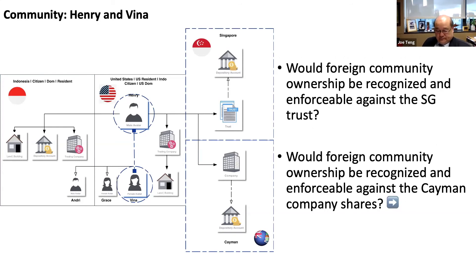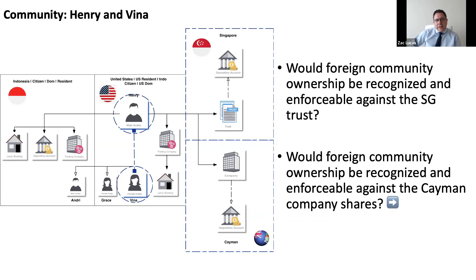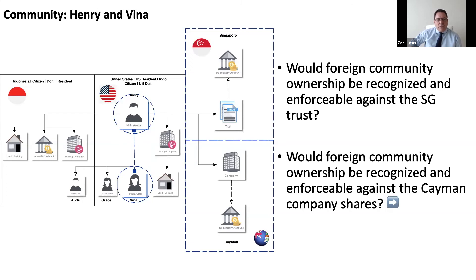Zach — is US community property ownership recognized and enforceable against the Singapore trust in this case? The same thing again — common law principles would be applied as to whether the assets transferred into the trust were totally the ownership of Henry. It would be a matter of proprietary rights being recognized under the marriage domicile. Singapore doesn't have any firewall protections that would defeat this proprietary ownership, and Singapore would look at the marriage domicile to see if it had community rights. So you would expect recognition of the community property transferred into the trust. Presumably Vena didn't give consent to that occurring, so it potentially could be a tracing claim. Likewise with Cayman — they would also recognize the foreign marriage domicile and the rights that flow from that.